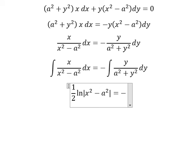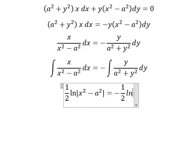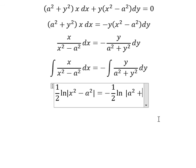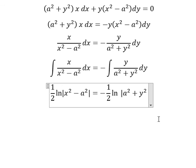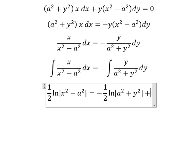This one gives negative one half ln of the absolute value of a squared plus y squared. And we add the constant c here.